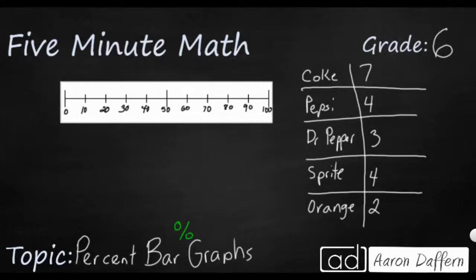And what it's going to do is show the relative value of each of these responses, the Coke, Pepsi, Dr. Pepper, and so on, in relation to each other by making that portion of the bar graph larger or smaller, depending on how many people chose it.